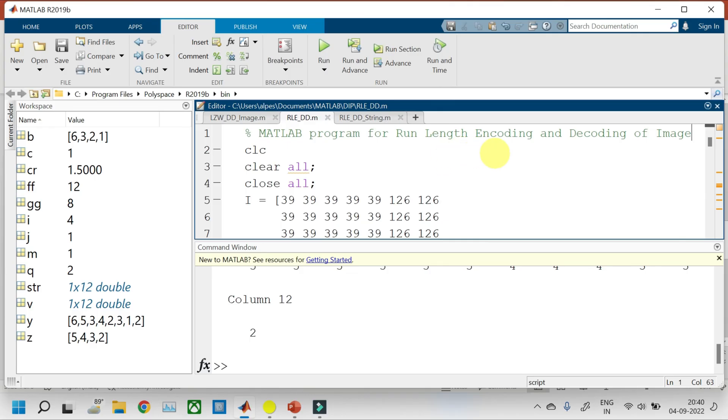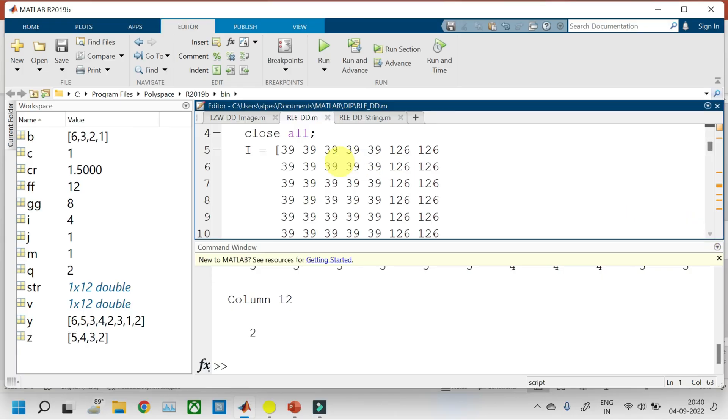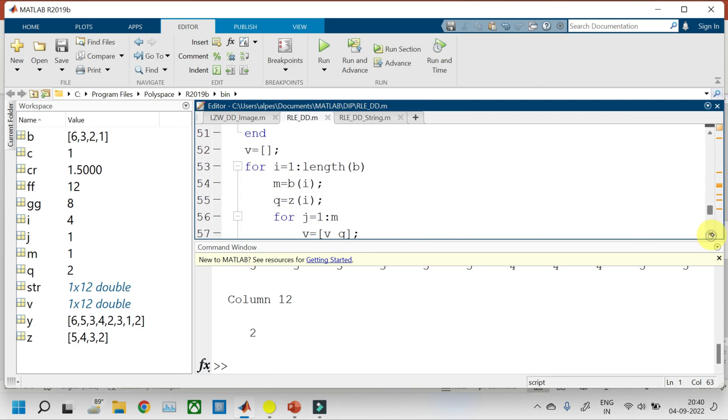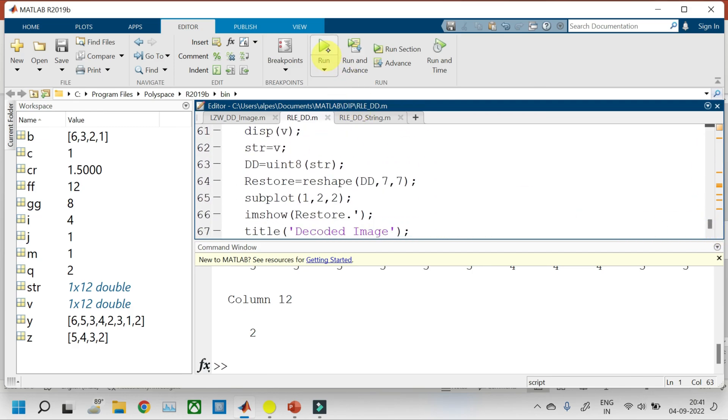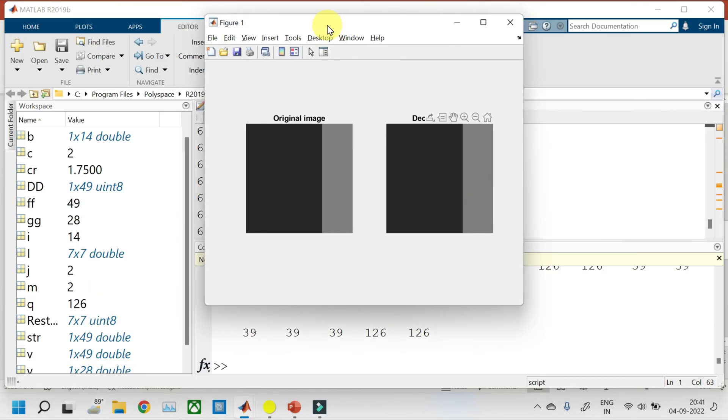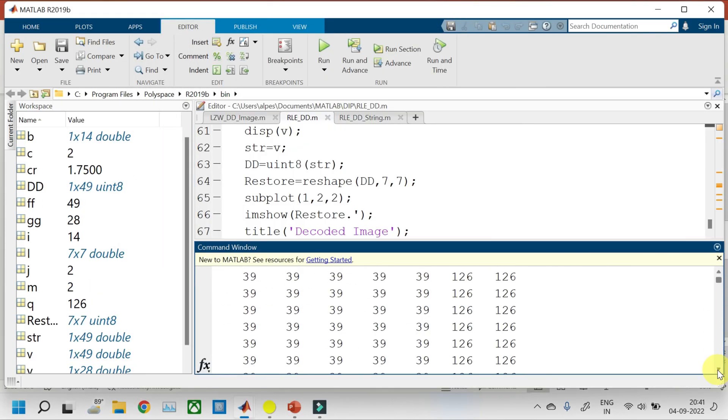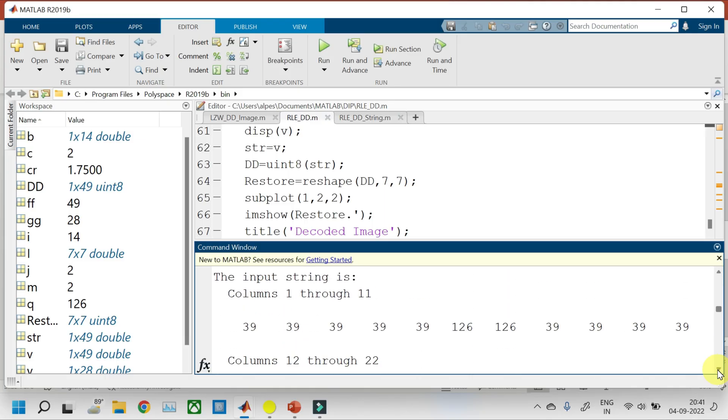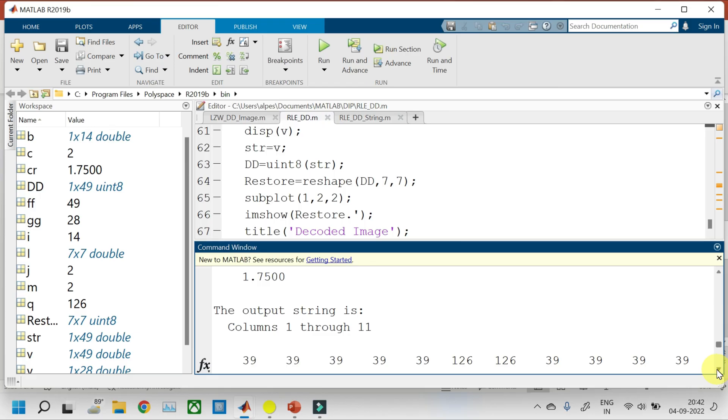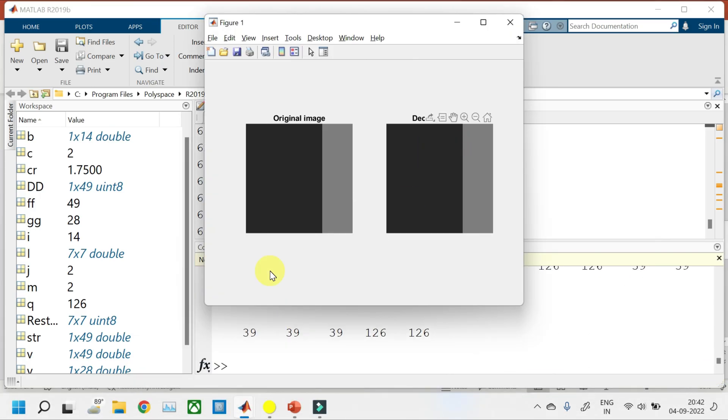And this program shows the run length encoding and decoding of an image. So we are choosing an image that is having only two values 39 and 126. Let us run the program and see the output. So these are the pixel values. And this is our encoded string 39 5 times, 126 2 times and the same thing is repeated. So we can see that the original image and decoded image are same and hence it is a lossless image compression technique.